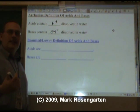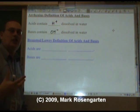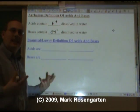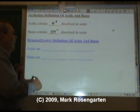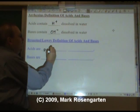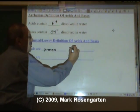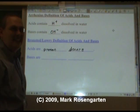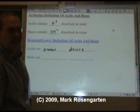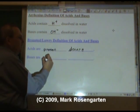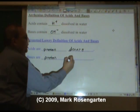Brønsted-Lowry defines Acids and Bases by their actions. What do they do in a chemical reaction? Acids are proton donors, kind of like a kidney donor, except you don't actually need to see a surgeon. Bases are proton acceptors.